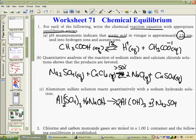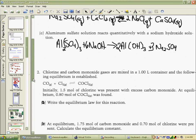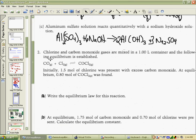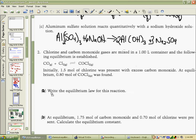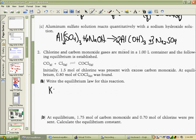Now, we'll move on to number 2. Chlorine and carbon monoxide are mixed in a 1 liter container, and the following equilibrium is established. So we have to write the equilibrium law for this reaction. Our equilibrium law is going to be the products, the concentration of our products, COCl2, divided by the concentration of the reactants, carbon monoxide and chlorine gas. That's all of our reaction.